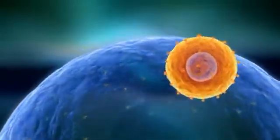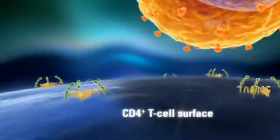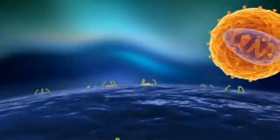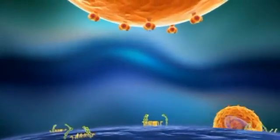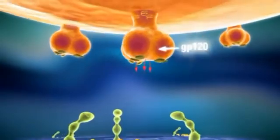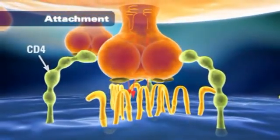Infection of the CD4 T cell by HIV occurs in three distinct sequential stages. In the first stage of the viral life cycle, known as attachment, the viral glycoprotein 120, or GP120, on the surface of the virus binds to the CD4 receptor on the surface of the host cell.